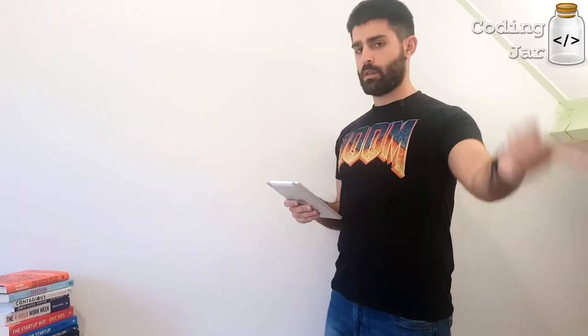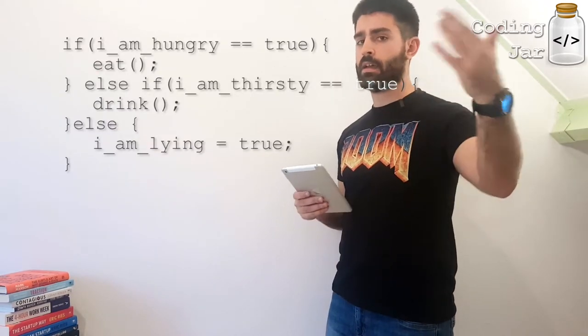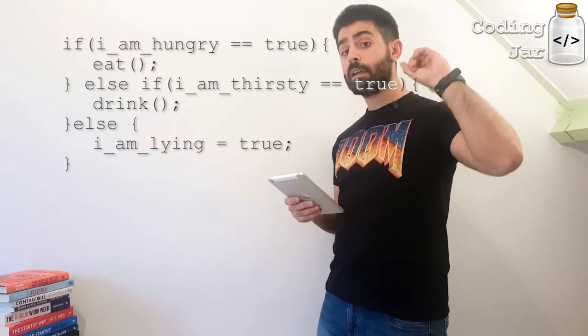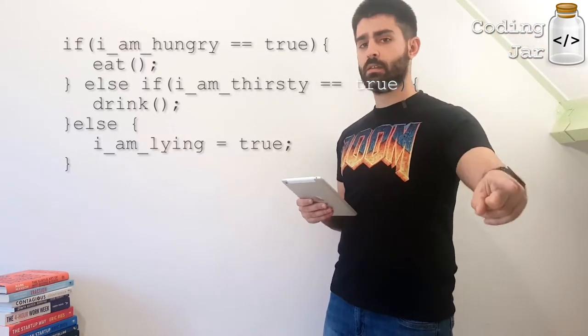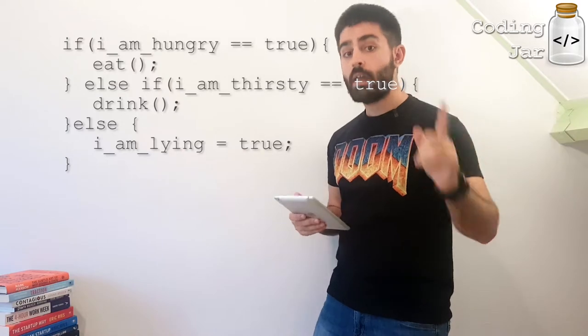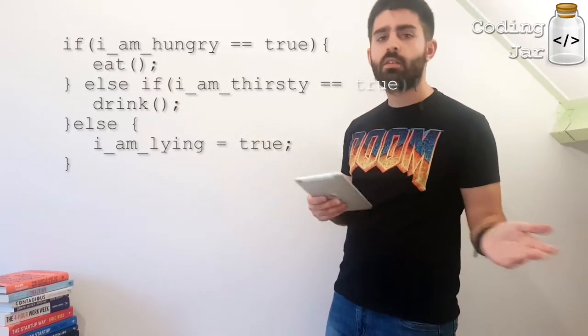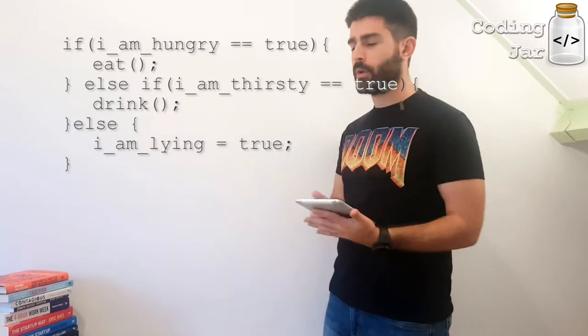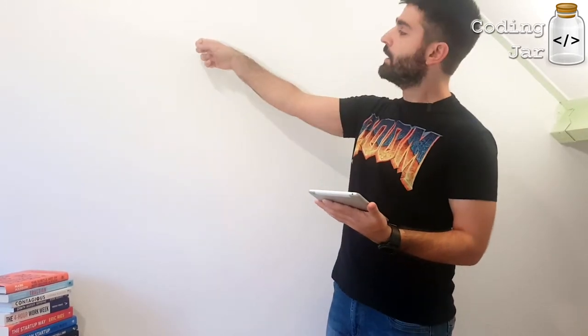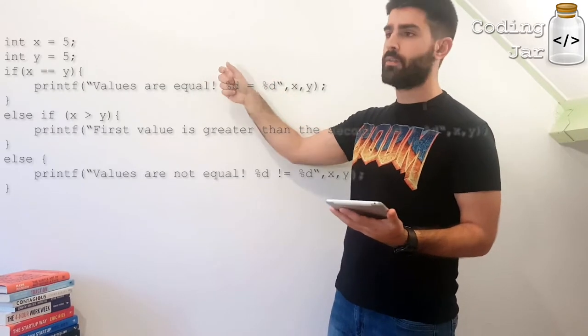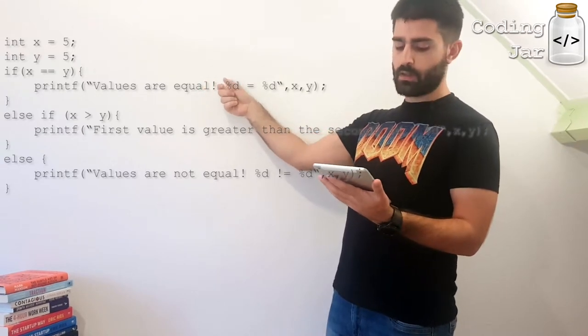And now we have if I am hungry, then I eat. Else if I am thirsty, I will drink. Else I am lying, because I'm always either thirsty or hungry. So yeah, it's either one of those.